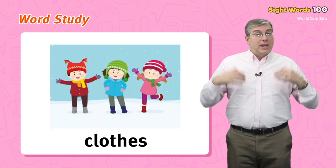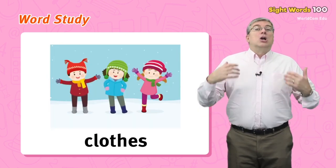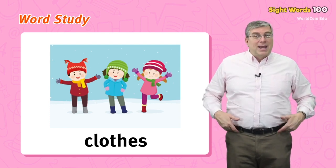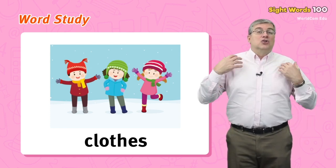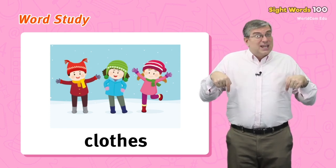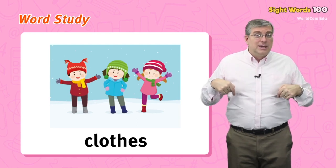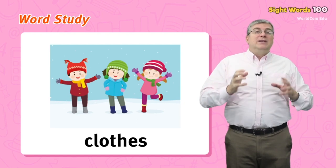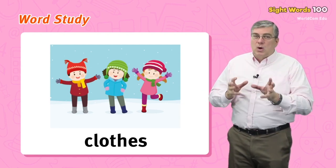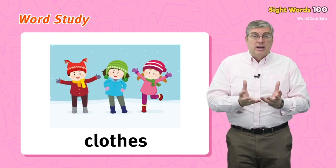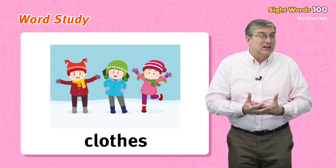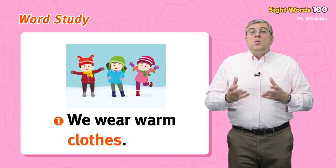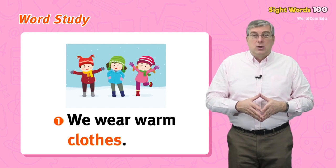Next we have clothes. Clothes are the things we wear — they include your pants, your shirt, your shoes, even your socks. It is a plural word, which means we think of it as a group of things. For example, we wear warm clothes.